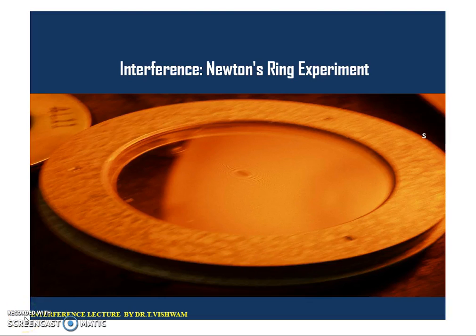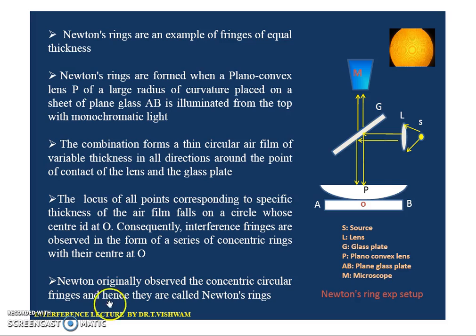Good morning students. In the last class we discussed about the wedge-shaped air film pattern. Today we are going to discuss about the plano-convex lens placed on the glass plate, set up with the Newton's rings experimental method. If we look at the figure, the plano-convex lens is placed on the glass plate, and it forms a circular air film because the plano-convex lens is a spherical lens.